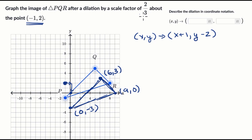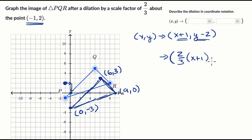Now the next thing we want to do is dilation by a scale factor of two thirds. To do that, you essentially just multiply every x and y by two thirds. So in coordinate notation, we multiply by two thirds: two thirds times x plus one, and two thirds times y minus two. Two thirds times zero is still zero; negative three times two thirds is negative two; nine times two thirds is six; zero times two thirds is zero — so that maps here. And then six times two thirds is four, and three times two thirds is two, giving us four comma two.